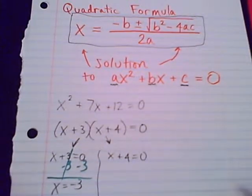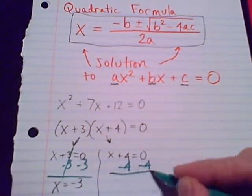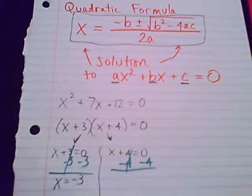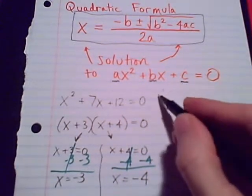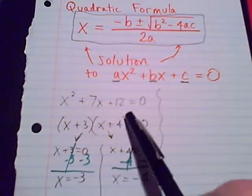And this other equation, solve for x, take away 4. Both sides leaves us with x equals negative 4. So those are the solutions we come up with for this equation.